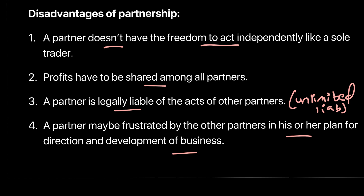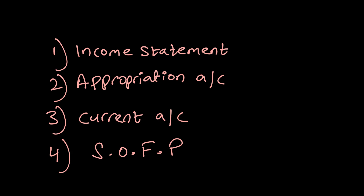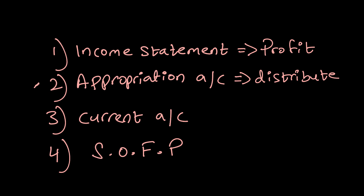Now let's move to accounting for partnerships. The first thing to discuss is how financial statements work, how profits are distributed, and how capital looks for a partnership. As usual, we draw an income statement to calculate the profit for the year. That's always the first step. Whereas for a sole trader this entire profit went to one individual, because we are a partnership this profit has to be distributed — and to distribute it we draw something called an appropriation account.